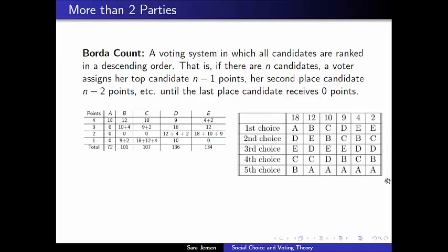But in a standard Borda count, if there are N candidates, the first place choice receives N minus one points, all the way until the last place candidate receives zero points. Once we've attributed points to an individual voter's profile, we look at the whole voting populace and count the total number of points that each candidate has received from the voters. For example, candidate A is the first choice of 18 different voters, and then candidate A is last place of every single other voter.